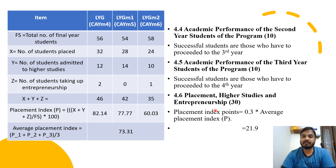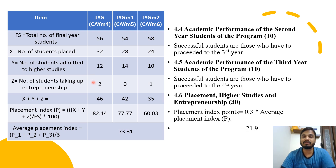Section 4.6 covers placement, higher studies, and entrepreneurship, carrying a large chunk of 30 marks. The formula is: Placement Index Point = 0.3 × Average Placement Index. FS is the total number of final year students; X is students placed; Y is students admitted to higher studies; Z is students taking up entrepreneurship. For LYG: 56 total students, 32 placed, 12 higher studies, 2 entrepreneurs. For LYG M1: 54 total, 28 placed, 14 higher studies, 0 entrepreneurs.